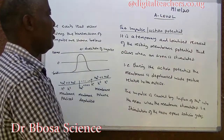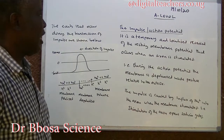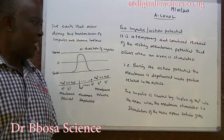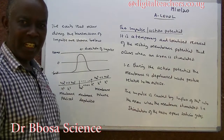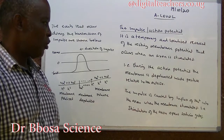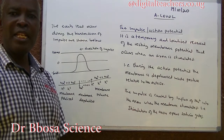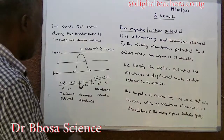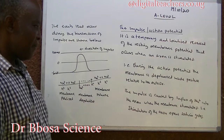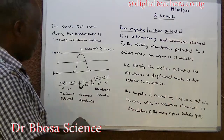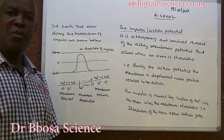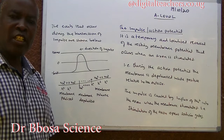The impulse or action potential is a temporary and localized reversal of resting membrane potential that occurs when an axon is stimulated. During the action potential, the membrane is depolarized — it becomes positive inside and negative outside. The impulse is caused by the influx of sodium ions into the membrane, because stimulation of an axon opens the sodium gates.